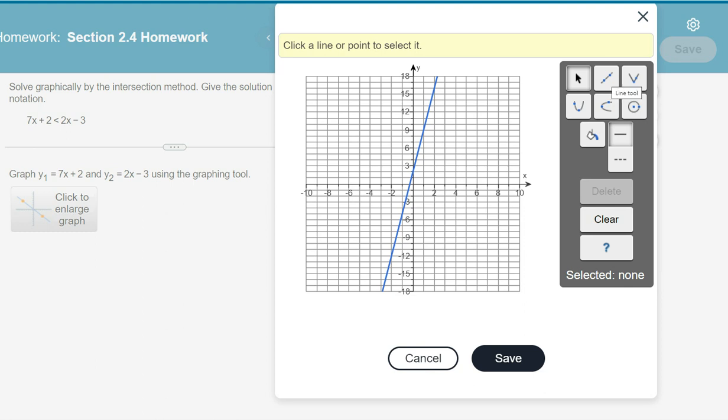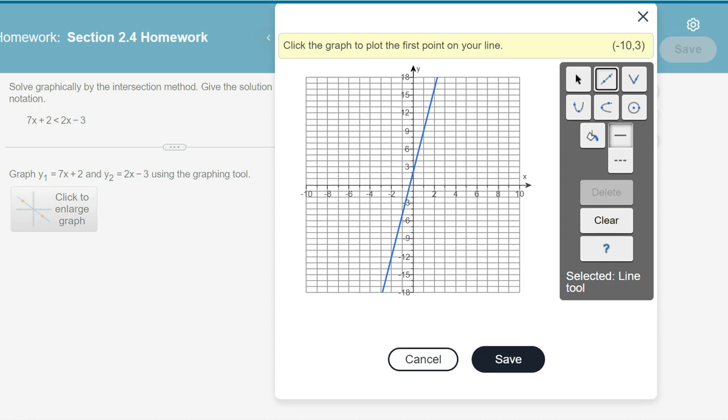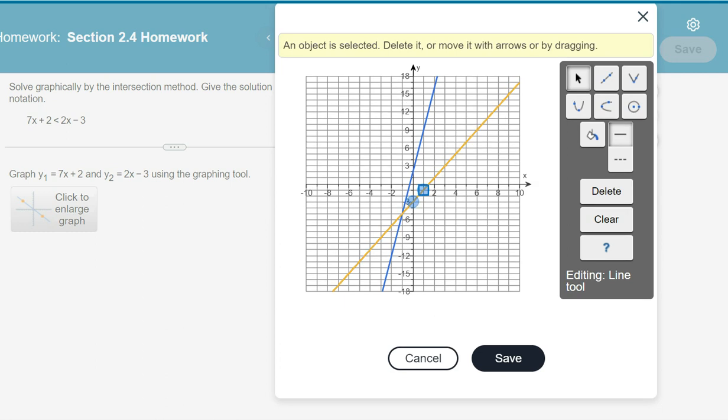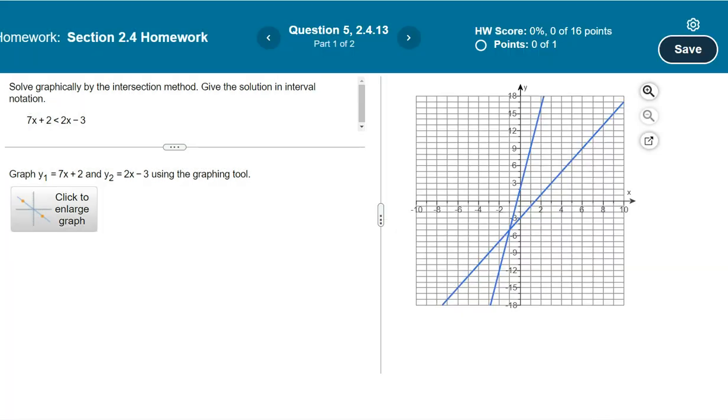And now to do the other side, you have to click the line tool a second time. And then the other equation that I have here is 2x minus 3, so I'm going to go to minus 3 on the y-axis, click. And the slope on this one is 2, so I'm going to go up 2, over 1, and lock it in place.